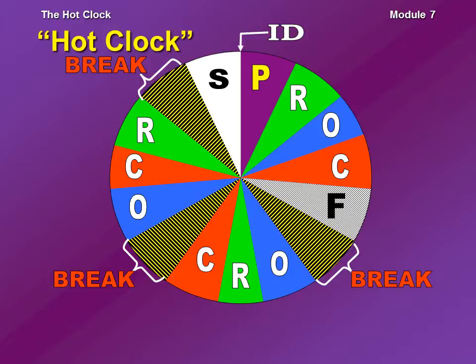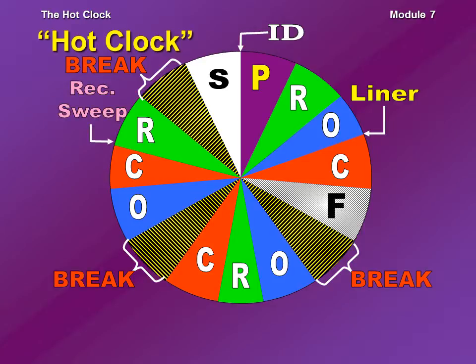Legal IDs aren't the only thing we're doing. We might have a live liner where the DJ opens up the mic and starts talking — for example, '90.1 KSAK, music and more from Mount San Antonio College.' And there are other things besides live liners. We have pre-recorded liners, which are called pre-recorded sweeps or recorded sweeps, and they have big production values.